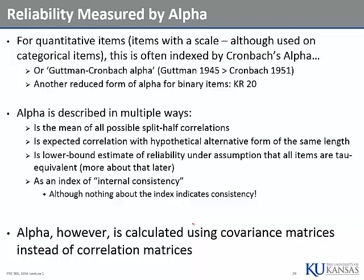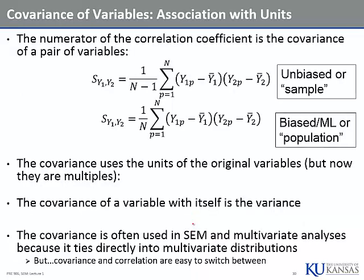You can talk about Alpha in lots of ways, but let's think of it as the correlation between the true score and your observed score. Another way to think about it is as your index of reliability. If Alpha is one, things are perfectly reliable, and that distribution of happiness is truly the happiness distribution. If Alpha is less than one, it's not perfectly reliable.